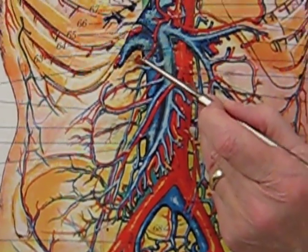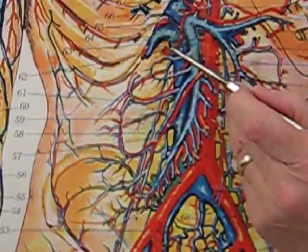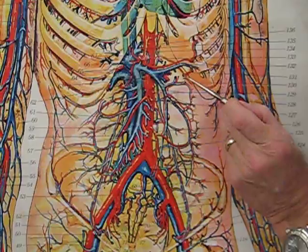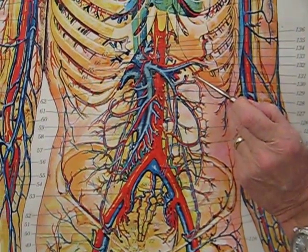That branch you do have to know, that's right gastric artery, that goes to the greater curvature of the stomach and anastomoses with left gastric artery.